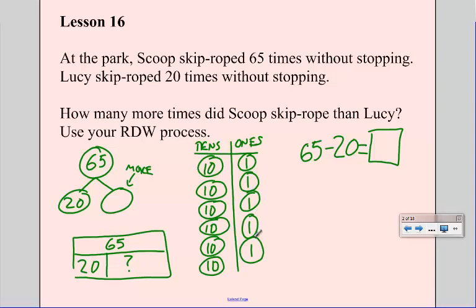And since I'm going to do subtraction, I'm looking for a difference, I need to take away what Lucy did. Since Lucy skipped 20 times, I would take away two tens, and that's going to leave me with four tens and five ones, or 45.